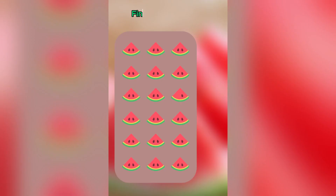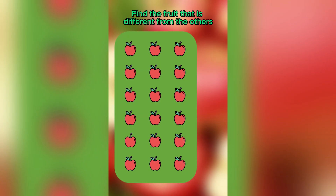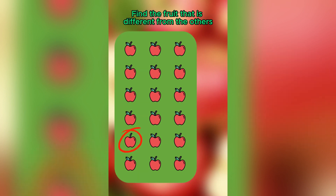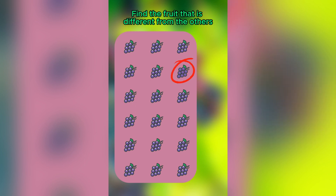Find the fruit that is different from the others. You have a countdown from 5 to 0 for each round — three rounds in total. Comment if you answered correctly all three times.